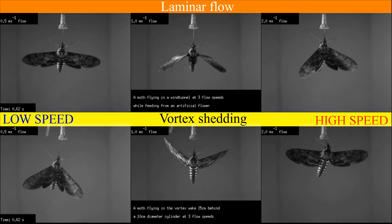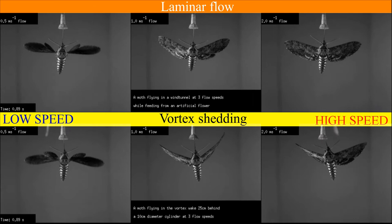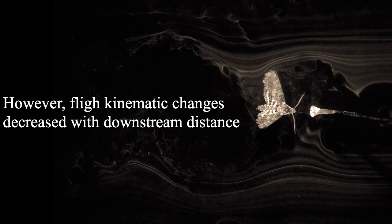When vortices exceeded one wingspan in diameter, the oscillation amplitude of the moths increased, and oscillation frequency matched vortex shedding frequency.